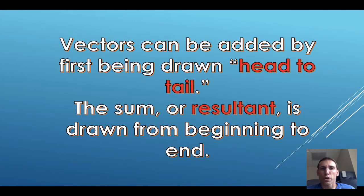Adding vectors makes the most sense when drawn out. When you draw them head to tail and then connect the beginning of that drawing to the very end of that drawing, you end up with the resultant, or the sum, of those vectors.